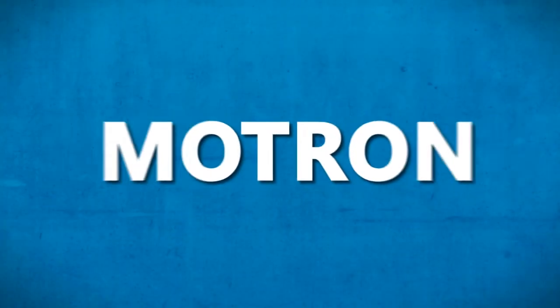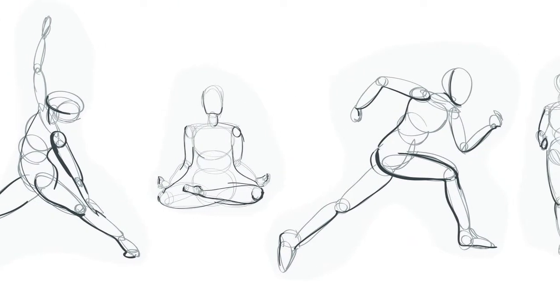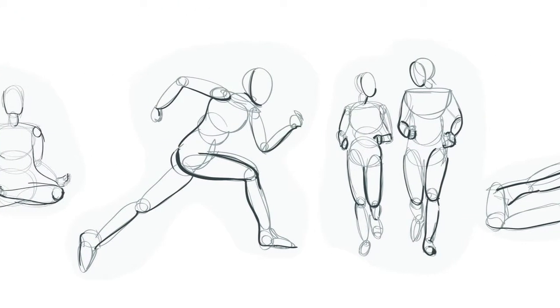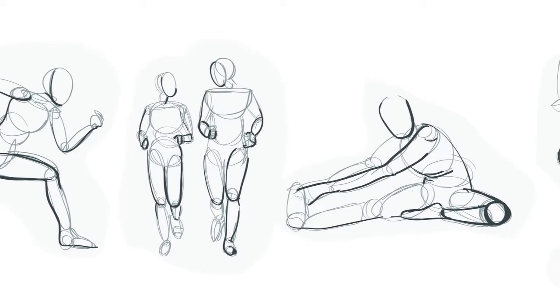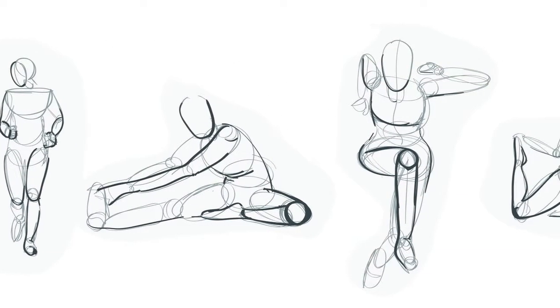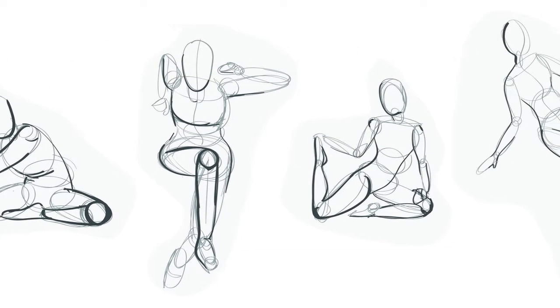The second key development is a new derived feature called a Motron. A large number of variables are required to define a person's position, their pose, and their velocity — that's their total body state.